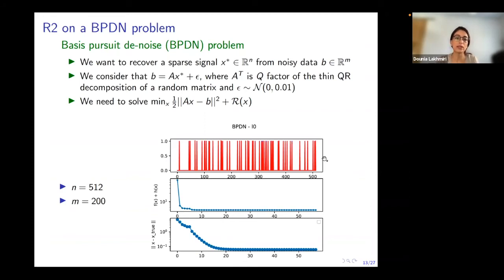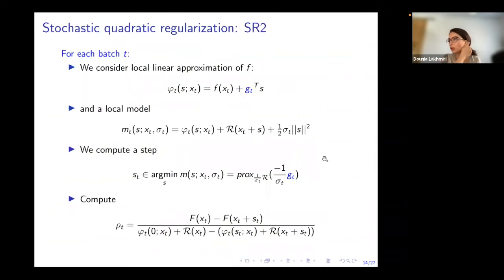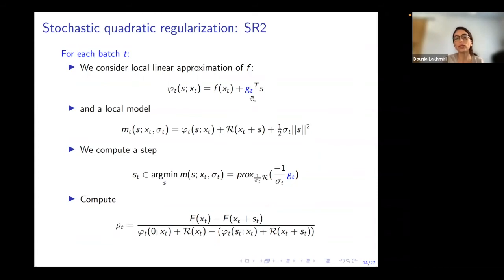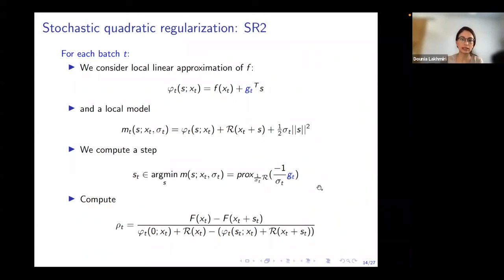Now let's extend R2 to the stochastic setting. The stochasticity comes from evaluating f on mini-batch samples — we don't have access to the full gradient, only stochastic gradients, each associated with a mini-batch. We deploy the same steps of R2 on each mini-batch, replacing the gradient of f with the stochastic gradient denoted J_t. We have a local approximation of f, compute our step, and decide whether to accept it based on the ratio rho comparing actual decrease versus model decrease. This variant is SR2, which I will use to show the experimental results.